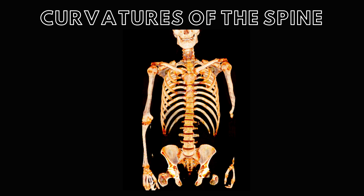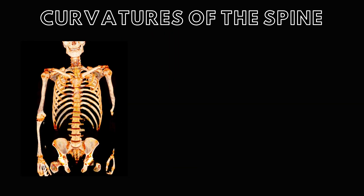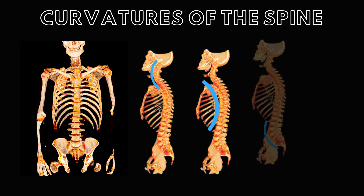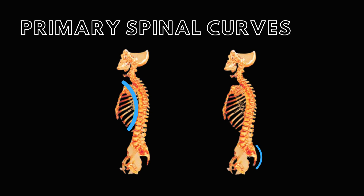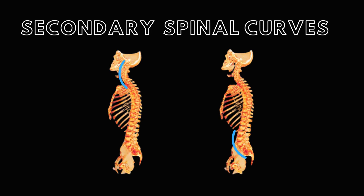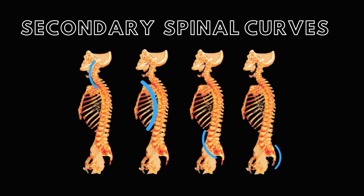Anteriorly, the vertebral column appears straight, but from a lateral view it shows four curves: cervical, thoracic, lumbar, and sacral. The thoracic and sacral curves are primary curves, present from fetal development, while the cervical and lumbar curves are secondary, or compensatory curves, developing later. These curves help align body weight with the center of gravity.